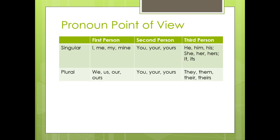The first person singular pronouns include I, me, my, or mine. If we're talking plural, then the first person pronouns are we, us, our, and ours. The second person pronouns don't change — they're you, your, and yours for both singular and plural. The third person singular pronouns are he, him, his, she, her, hers, it, and its. For plural, it's they, them, their, and theirs.